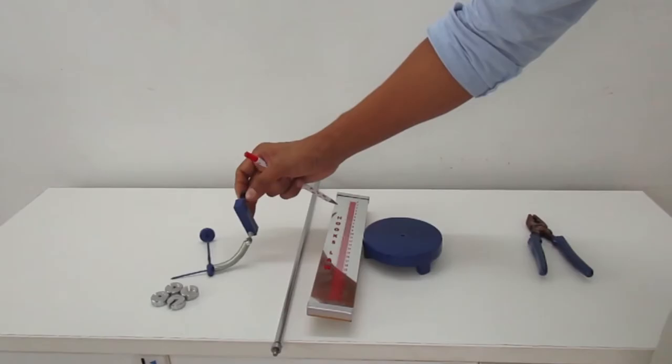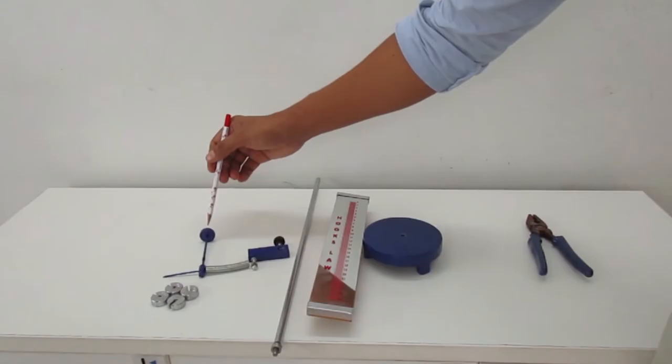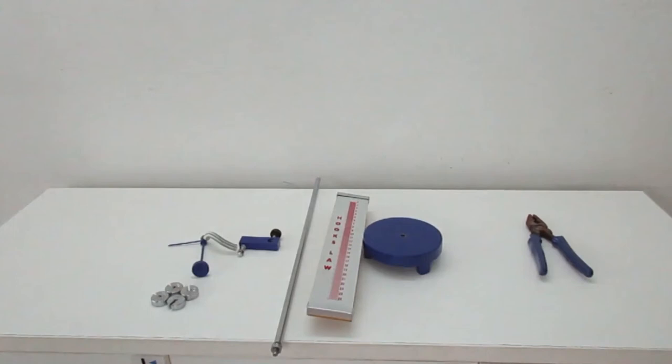It also includes a bosset, a pointer attached with the spring, a weight hanger, and slotted weights.